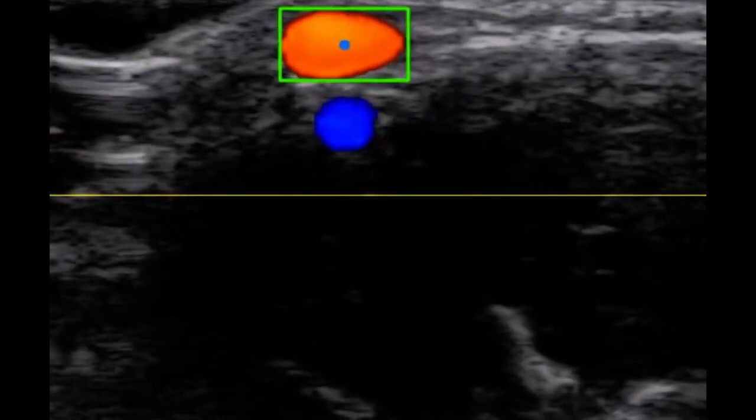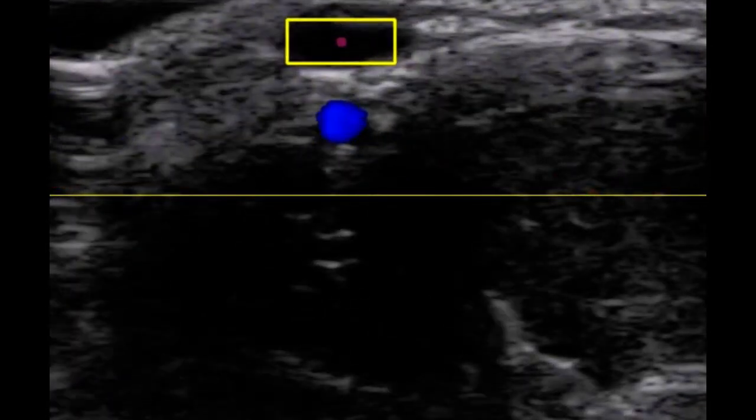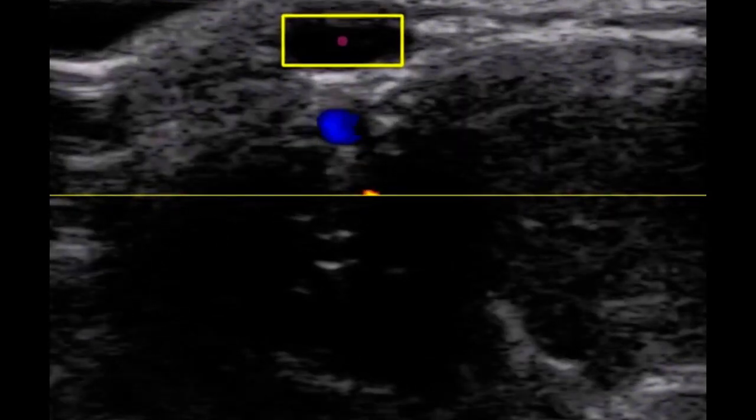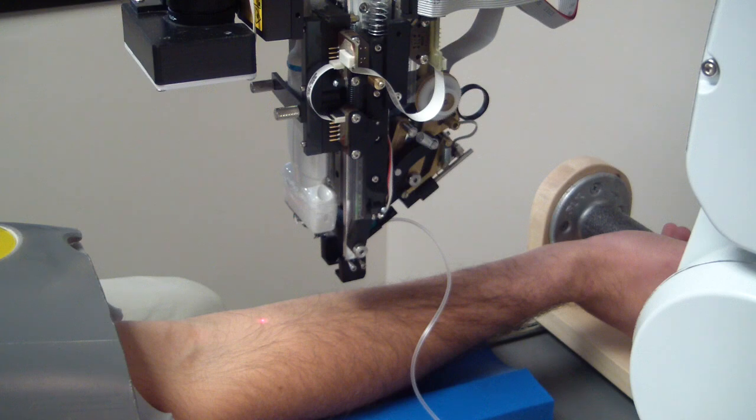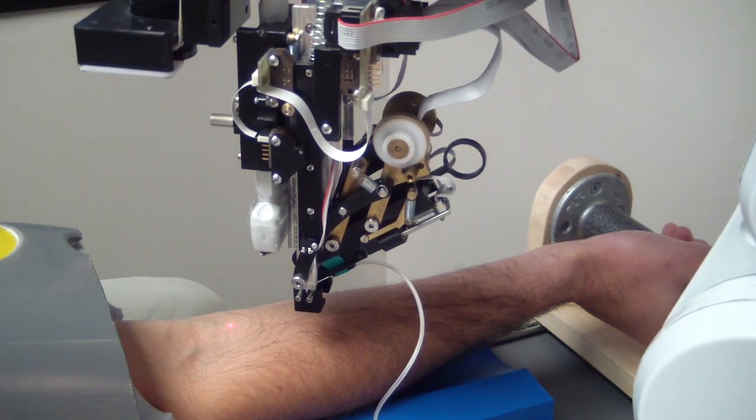Once the V-Bot system selects a target vein, it turns to ultrasound to confirm that the selected vein has sufficient blood flow for a successful blood draw. The robot then aligns the needle and sticks it in. The whole process takes about a minute.